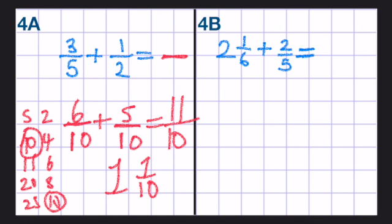Here we have 2 wholes and 1 sixth add 2 fifths. So we'll change them so they have the same denominator so we can add them. But first, we have to change the mixed number into an improper fraction. 2 times 6 is 12 plus 1, 13 sixths, and then add 2 fifths. Now, if we're going to look at the 6 times table and the 5 times table, the common multiple is 30.